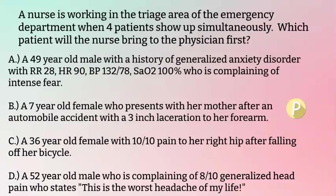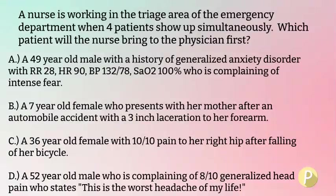Option D: a 52-year-old male who is complaining of eight out of ten generalized head pain who states this is the worst headache of his life. Yet another pain option — but what condition typically presents with a patient reporting the worst headache of their life? This is a classic sign of a ruptured brain aneurysm. The chances of surviving a ruptured brain aneurysm are only one in two, and the odds of surviving without severe brain damage are only one in four. So this is definitely risk for loss of life. Therefore, option D becomes our priority and is our correct answer.